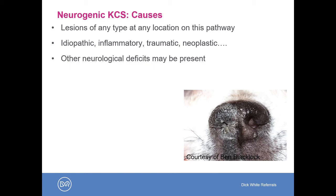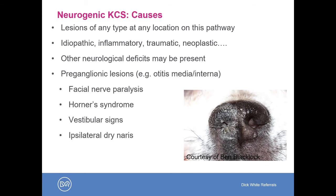Depending on the exact cause and location of the defect, other neurological deficits may be present. In pre-ganglionic lesions — for example where the lesion is associated with otitis media and interna — we may see signs of facial nerve paralysis, Horner's syndrome, vestibular signs, and commonly a dry ipsilateral nostril, as can be seen in the photograph here. In post-ganglionic lesions, we can see periocular anaesthesia.